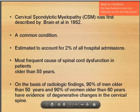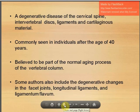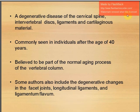Cervical spondylotic myelopathy (CSM) was first described by Brain et al. in 1952. It is a very common condition — estimated to account for 2% of hospital admissions. It is the most frequent cause of spinal cord dysfunction in patients older than 55 years. Based on radiologic findings, 90% of men older than 50 and 90% of women older than 60 have evidence of degenerative changes in the cervical spine. It is a degenerative disease.